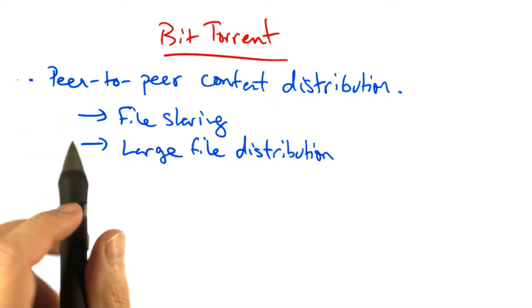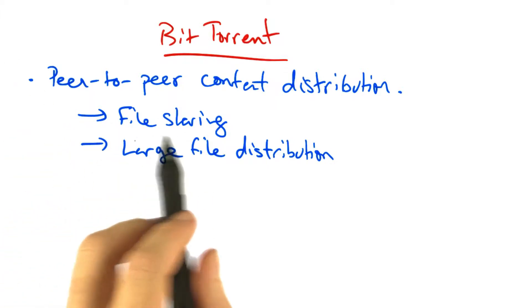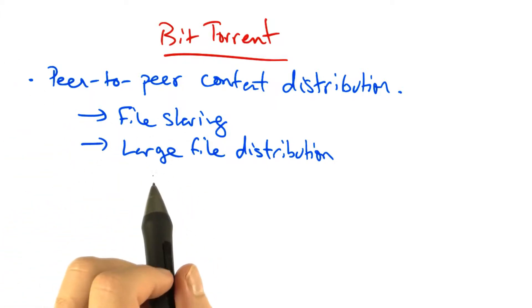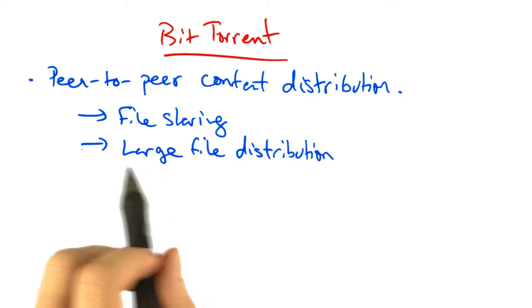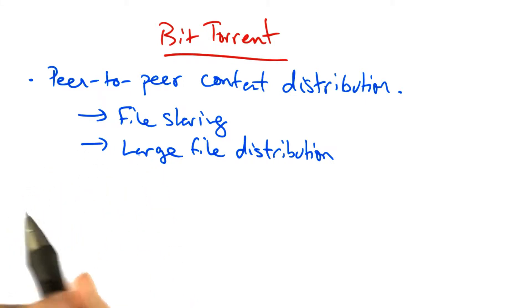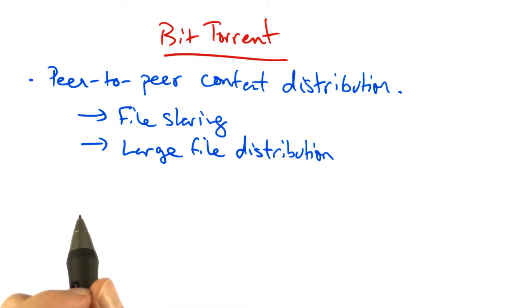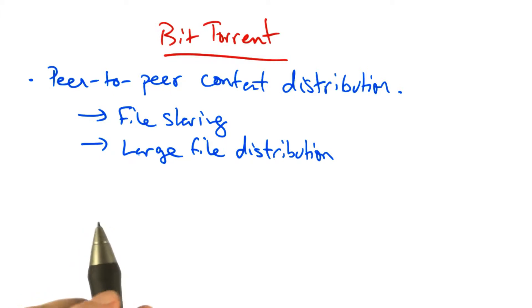We're now going to talk about BitTorrent, which is a peer-to-peer content distribution network that is commonly used for file sharing and distribution of large files.